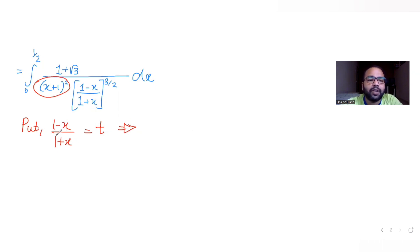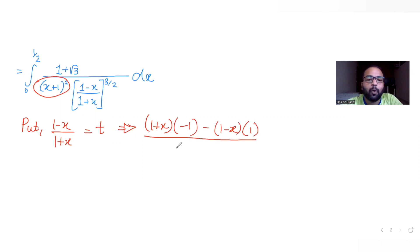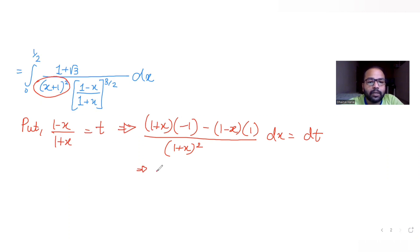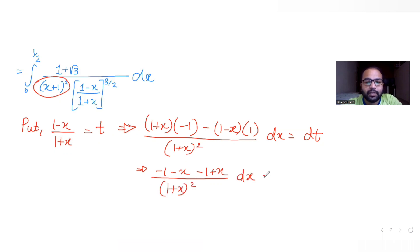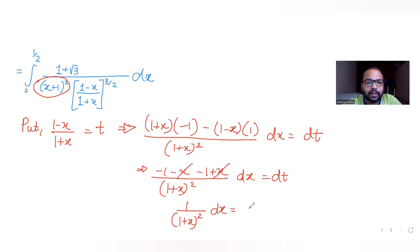Using the quotient rule: the derivative of u/v is (v·du − u·dv) / v^2. Applying this to t = (1−x)/(1+x), we get dt = [−(1+x) − (1−x)] / (1+x)^2 · dx, which simplifies to −2/(1+x)^2 · dx.